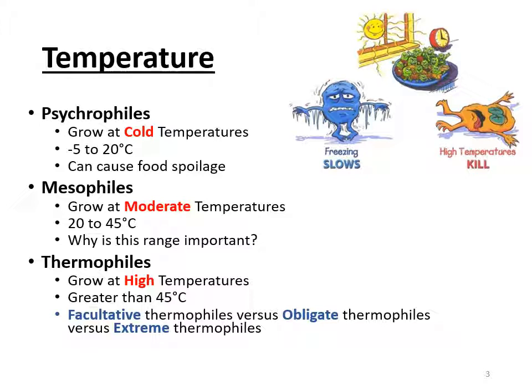You can see on the slide that the range is from minus 5 to 20 degrees Celsius. Because they thrive in cold temperatures, you have to ask yourself where you might find a psychrophile. They grow in the refrigerator, so it makes sense that these guys will cause food spoilage in your fridge. The next category — put stars next to it, circle it, highlight it — is mesophiles.